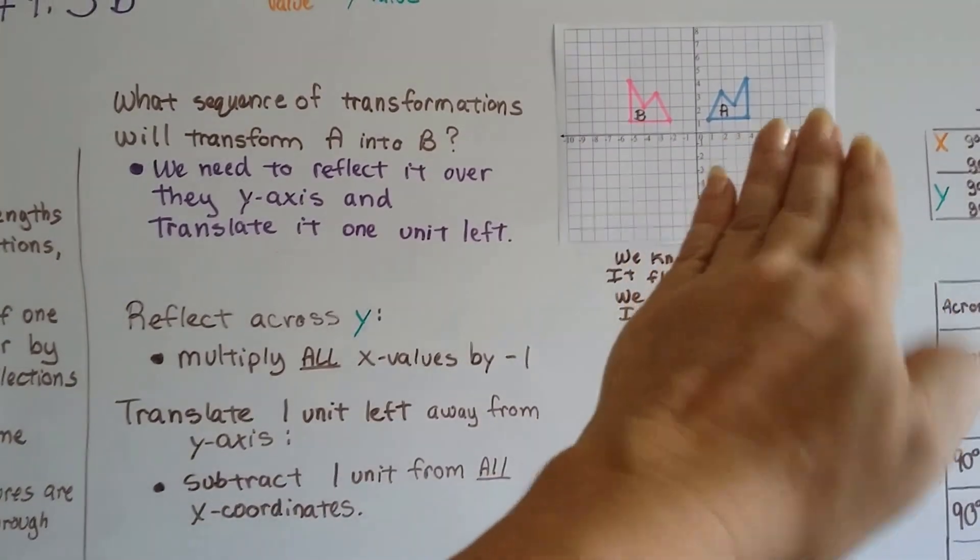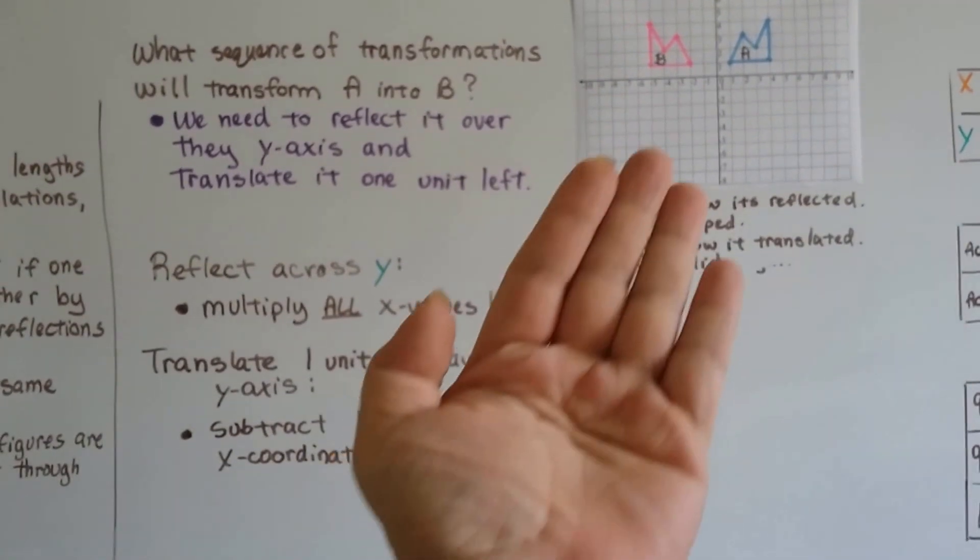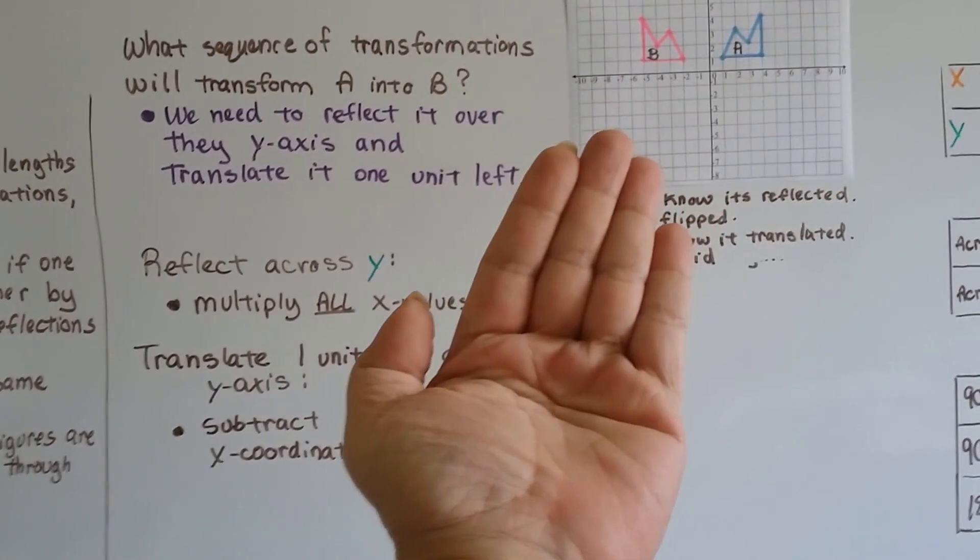Not from A. We would reflect it, and we would subtract one unit from all the y coordinates of the newly reflected image.